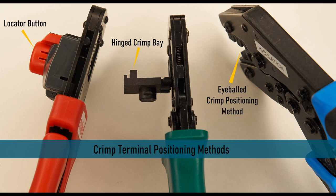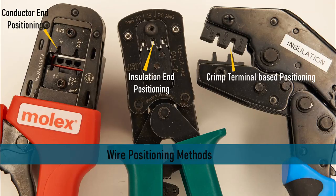Ratchet operation crimp tools can have slight differences between them, so I'm going to compare a few of them to explain this. The two main differences revolve around how the metal crimp is inserted and positioned, and how the wire is positioned.